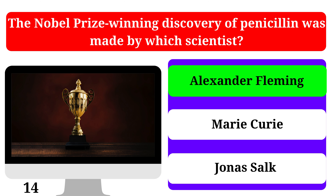Who was the first person to orbit the Earth in space? Yuri Gagarin, Neil Armstrong, or Buzz Aldrin. The correct answer is Yuri Gagarin.